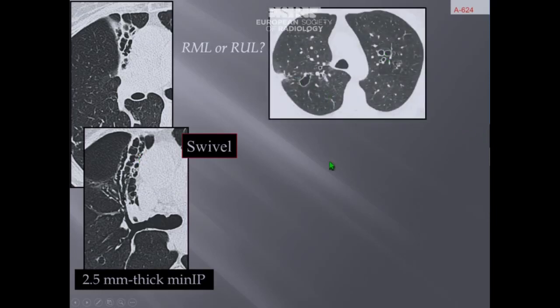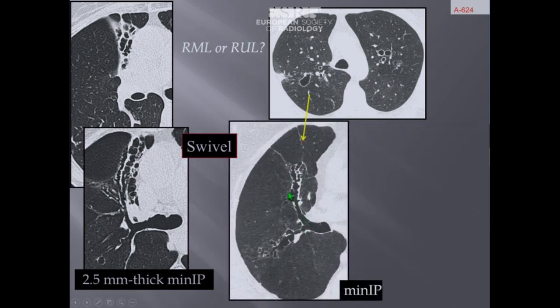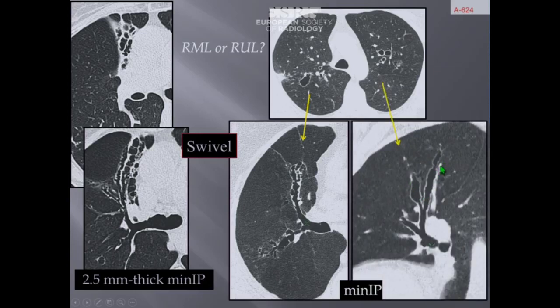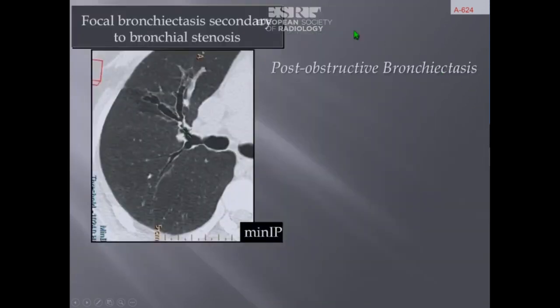In a second example, we have bilateral bronchiectasis in the upper lobes. Using swivel and minimum intensity projection, we see varicose bronchiectasis involving the segmental bronchi anterior and posterior of the right upper lobe, and subsegmental bronchi dilated in the upper apical segment of the left upper lobe. This technique is also very well appreciated in focal bronchiectasis, helping the radiologist detect any obstruction in the airways, as seen in an example of post-stenosis with post-obstructive bronchiectasis in the anterior segment of the right upper lobe.